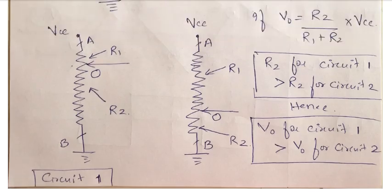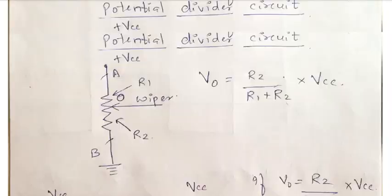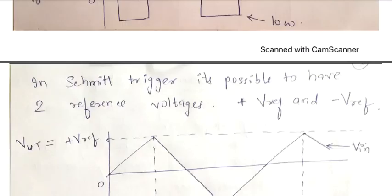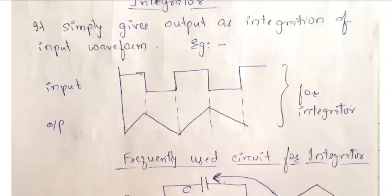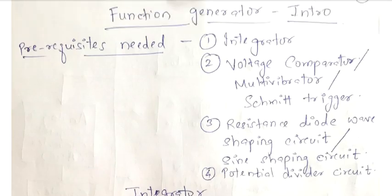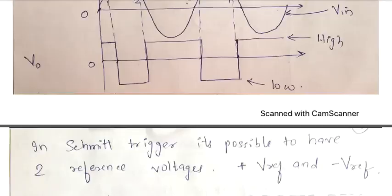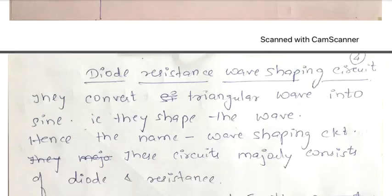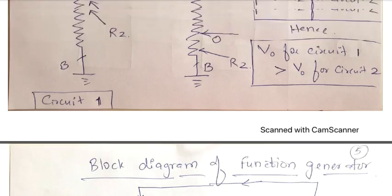So that's about the potential divider circuit. Taking you back to the first page — you had to study four prerequisites: integrator, Schmitt trigger, wave shaping circuit, and potential divider circuit. Now that you are aware of all these circuits, in the next video I will actually start with the block diagram of the function generator.